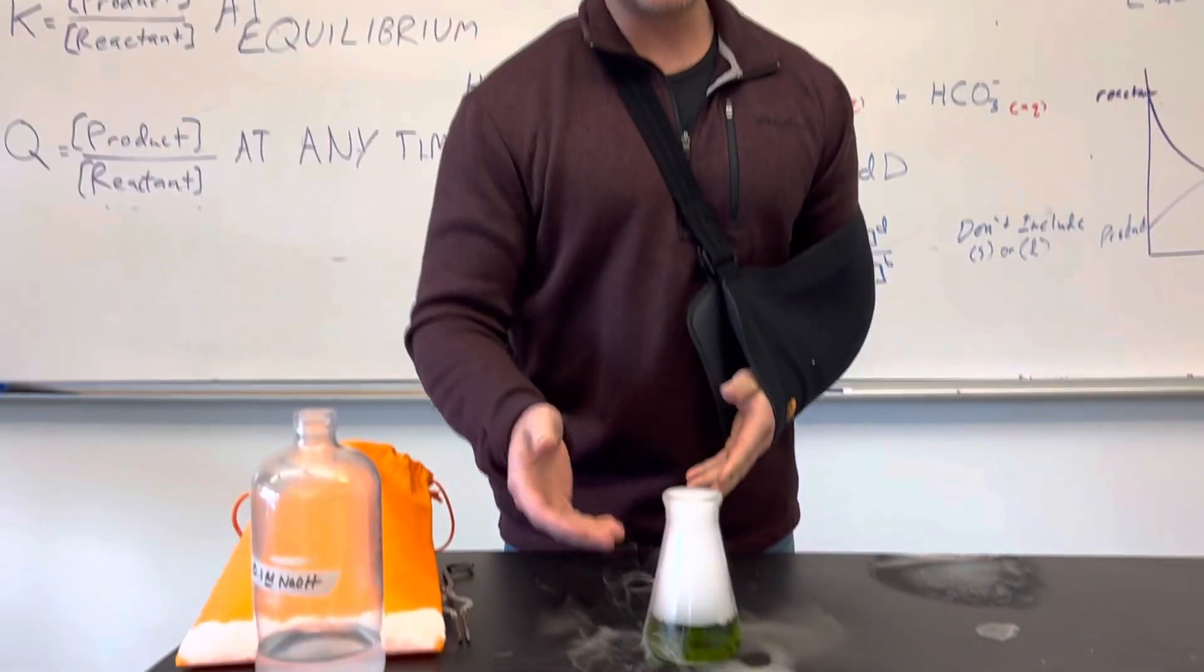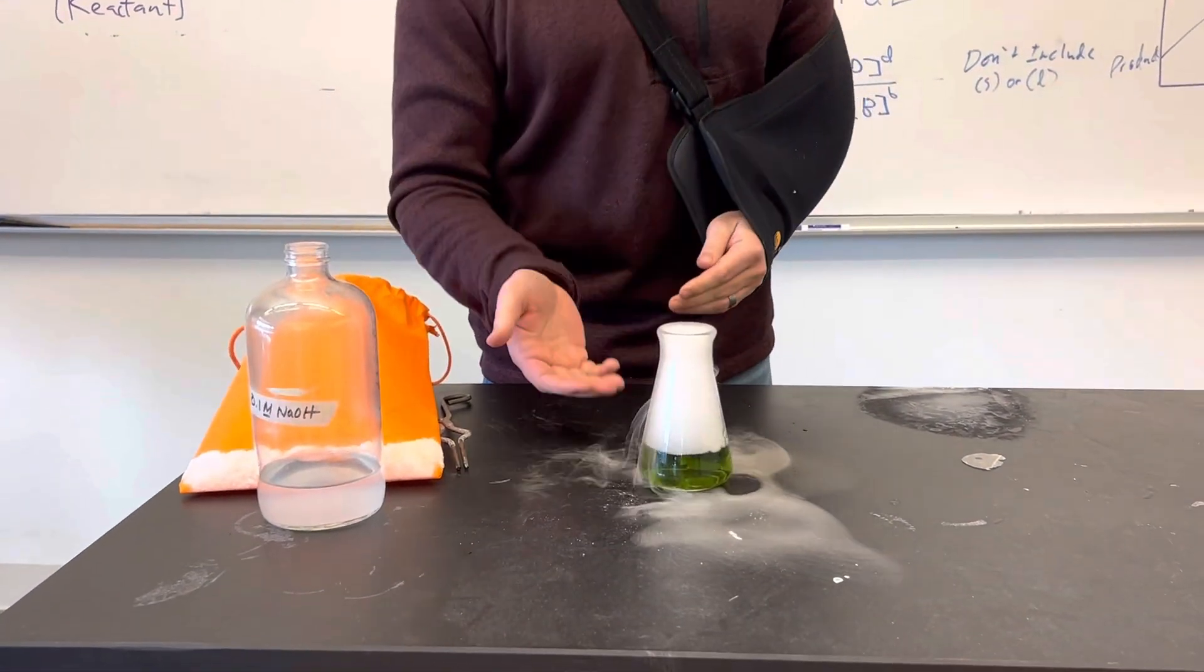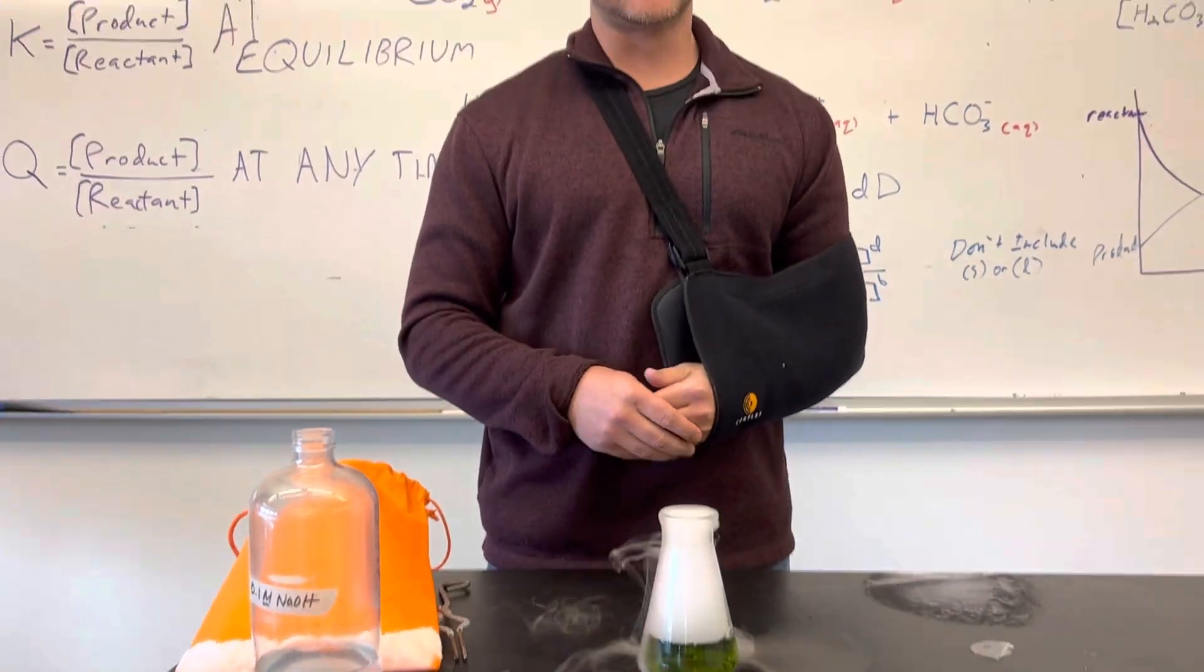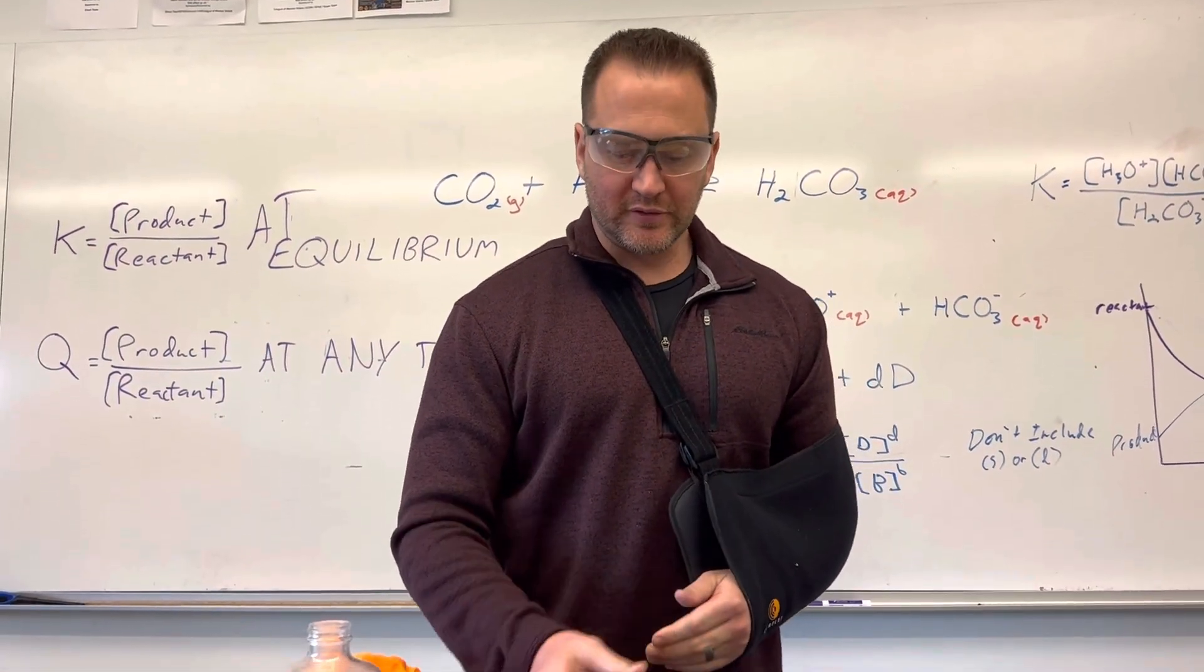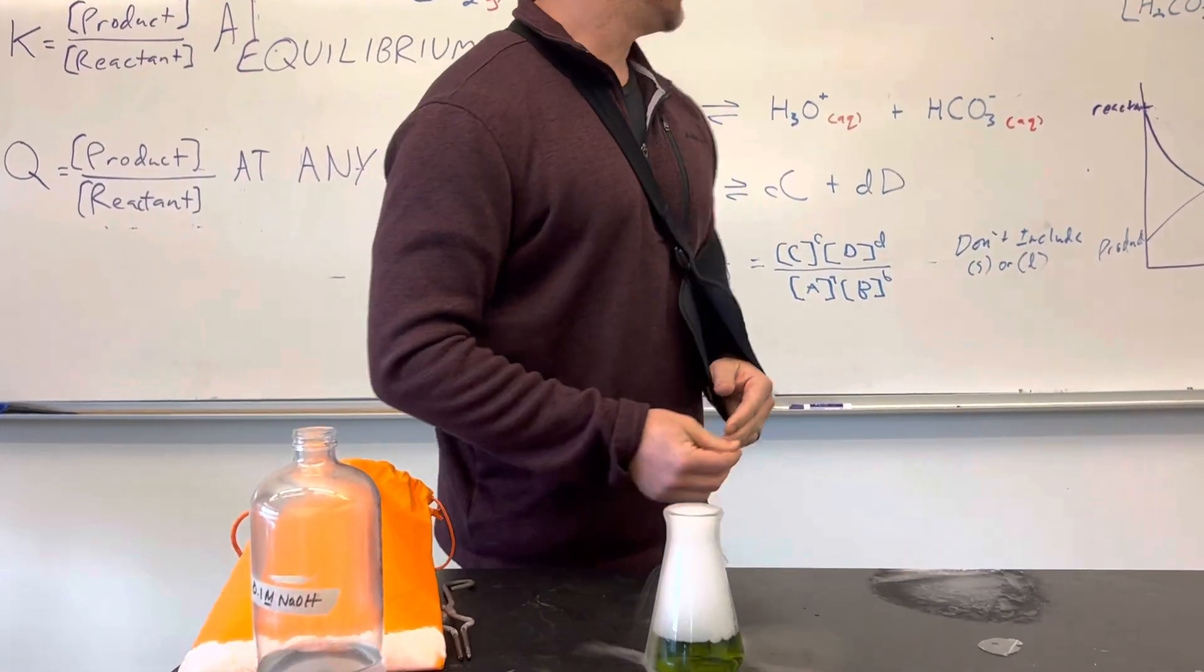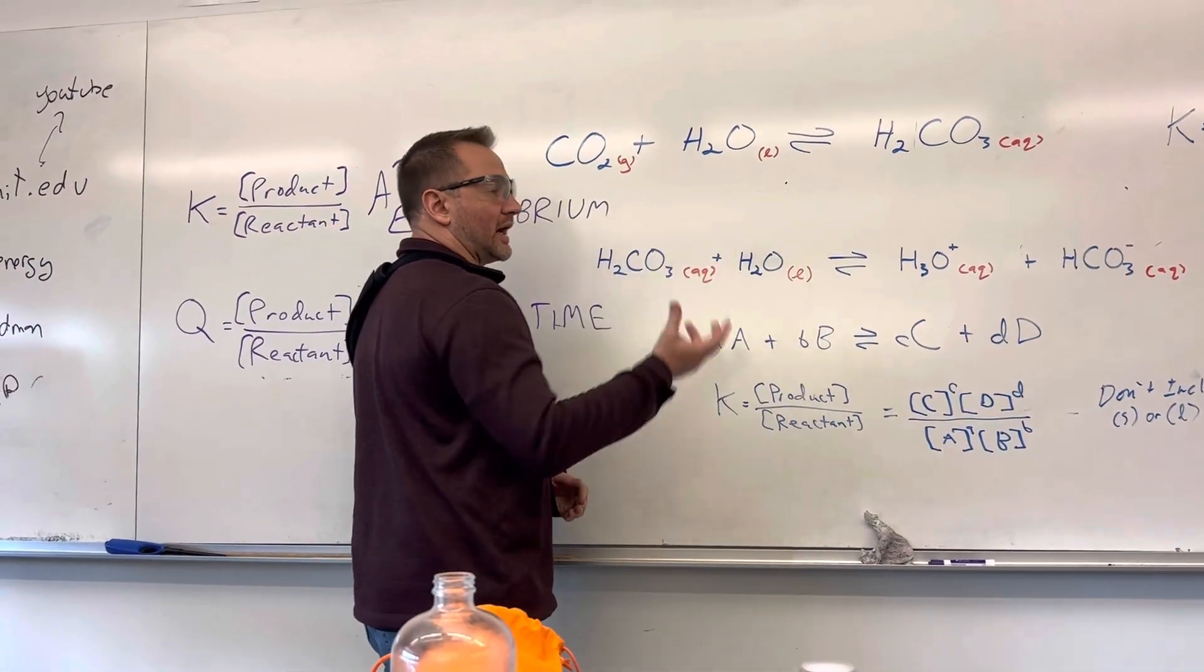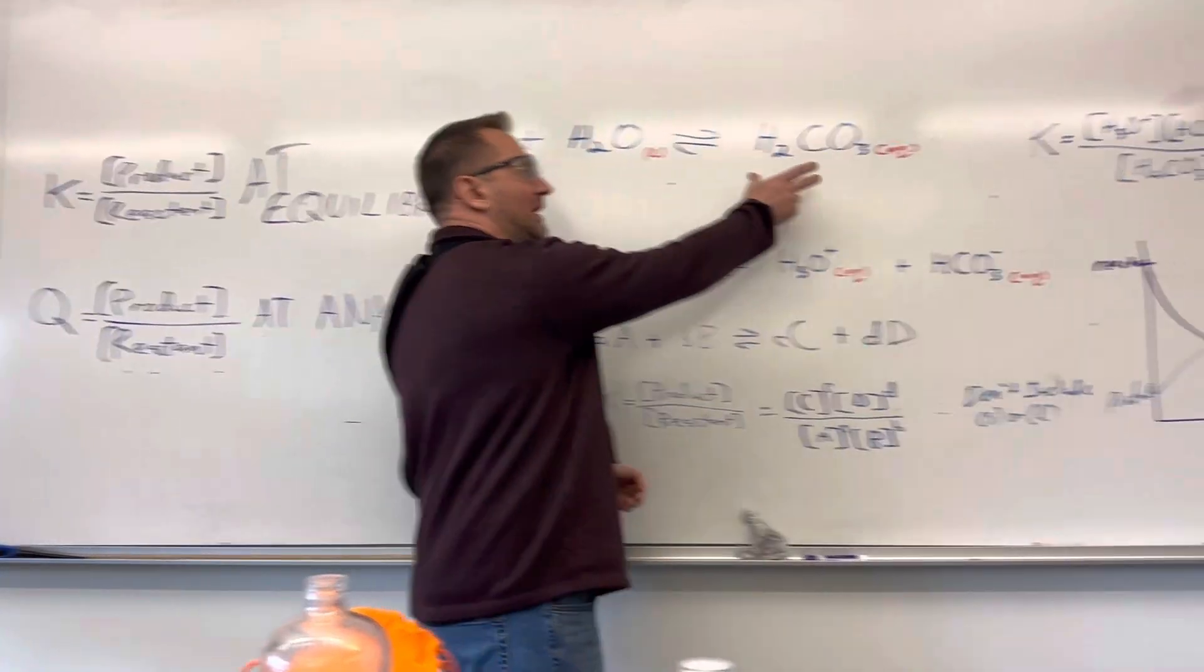So we're going to start by putting some dry ice, which is solid carbon dioxide, in a sample of water with some universal indicator in it. When you put carbon dioxide in water, it's going to dissolve in the water and react with it to form carbonic acid.